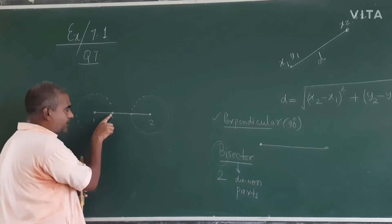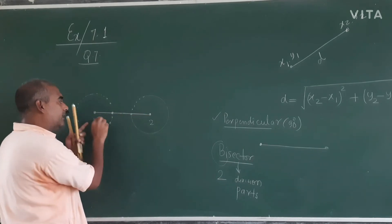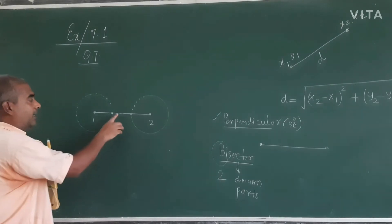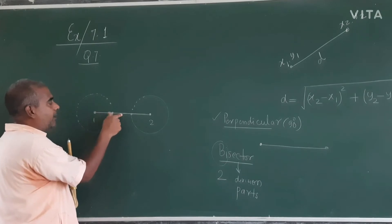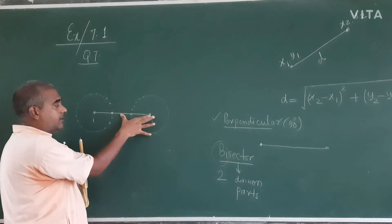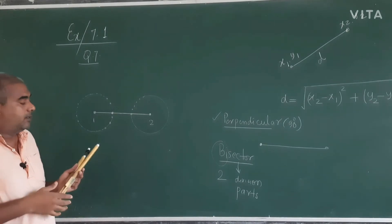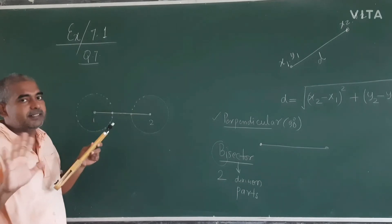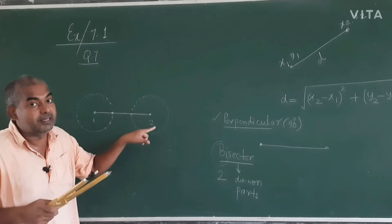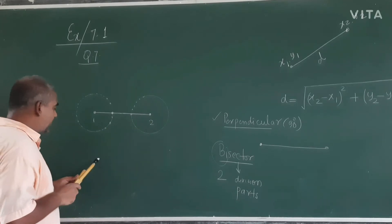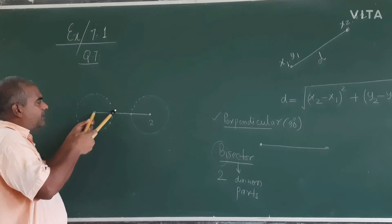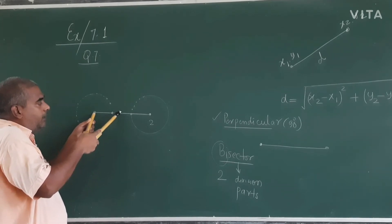We want a point that is equidistant from both endpoints at the same time — that would be the midpoint. But if the two circles are not intersecting each other, we are not getting any common point. A common point means a point that lies on both circles simultaneously.